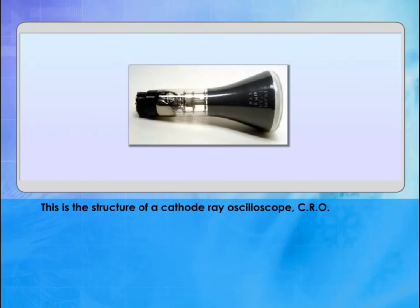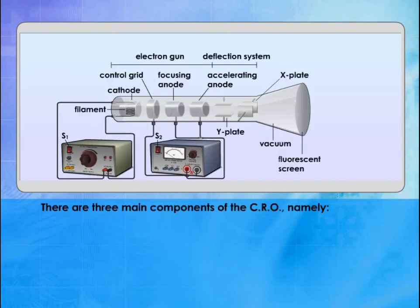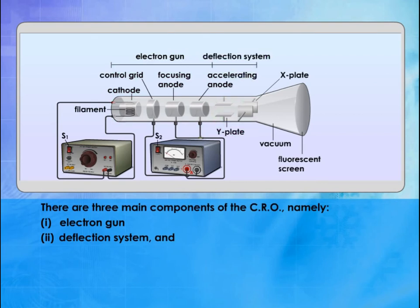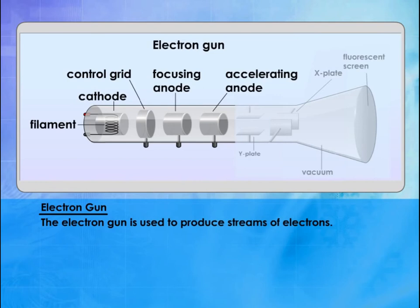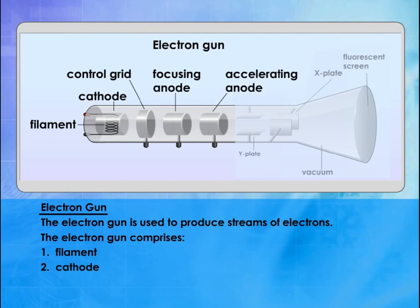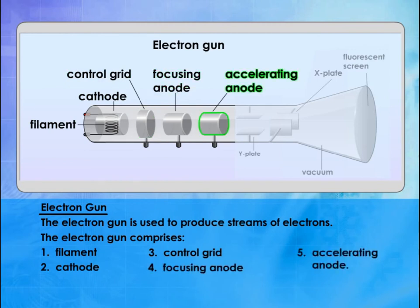This is the structure of a cathode ray oscilloscope. There are three main components of the CRO: 1. Electron gun, 2. Deflection system, and 3. Fluorescent screen. The electron gun is used to produce streams of electrons. The electron gun comprises: 1. Filament, 2. Cathode, 3. Control Grid, 4. Focusing Anode, and 5. Accelerating Anode.